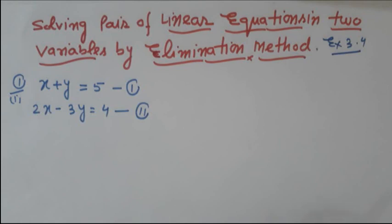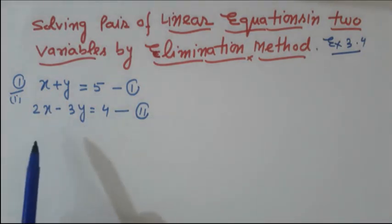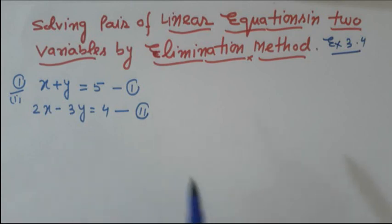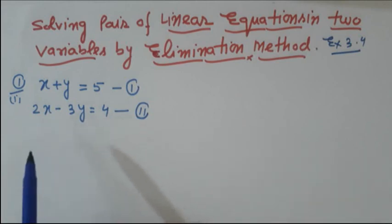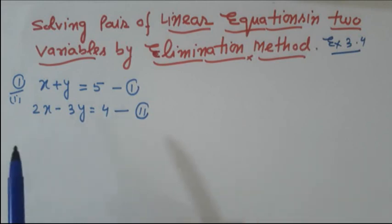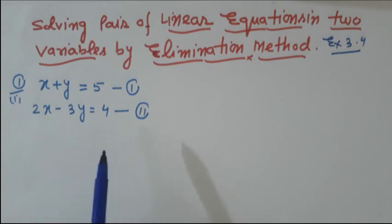Let us start exercise 3.4. Question number one, first part: x plus y is equal to 5, and 2x minus 3y is equal to 4. Now see what are the steps of the elimination method. In the elimination method, we have to eliminate any one of the variables — either x or y.